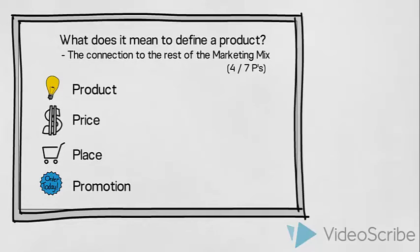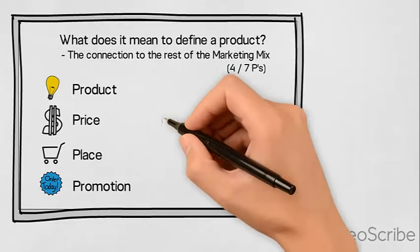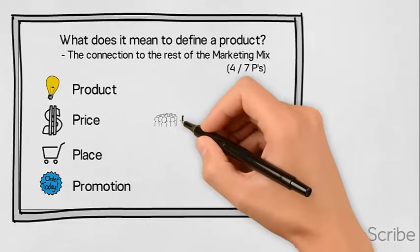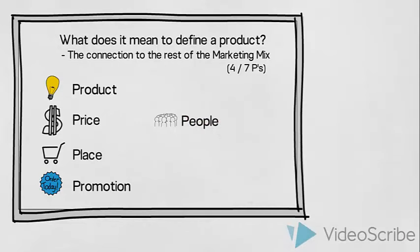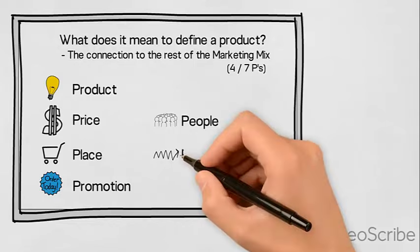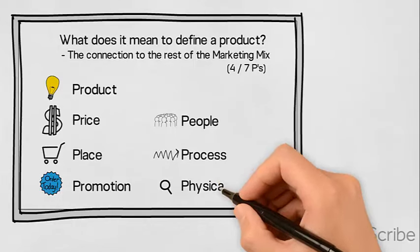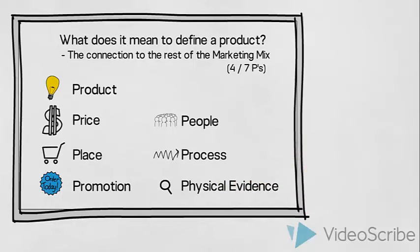If we are dealing with an offering that is better described as a service or perhaps a product that includes large elements of service, we might also want to look at the additional three Ps. The people that are involved in delivering the service, the process that our customers will go through in order to receive our service and the physical evidence, any visible or tangible elements that the customer will see, hear or in other ways experience when receiving the service.